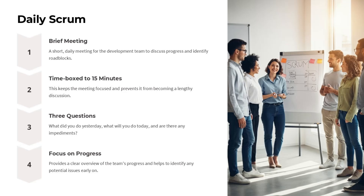The daily Scrum is a brief 15-minute meeting for the development team to discuss progress and identify any roadblocks. During the meeting, the team answers three key questions: What did you do yesterday? What will you do today? And are there any impediments? This format keeps the meeting focused and ensures the team has a clear overview of progress being made. By identifying issues early, the team can address them quickly and maintain momentum on the project.